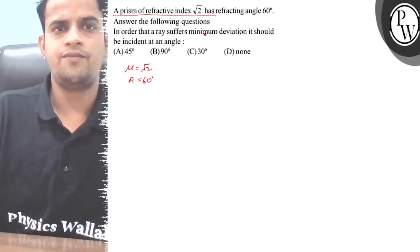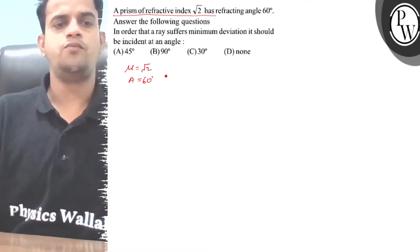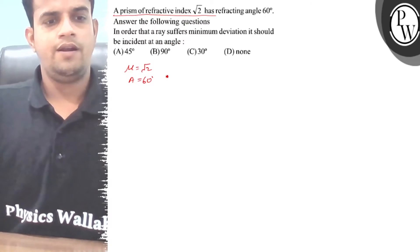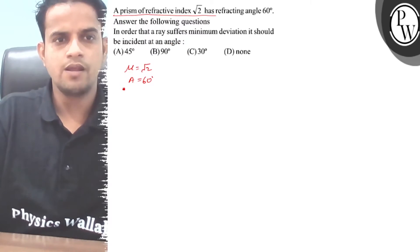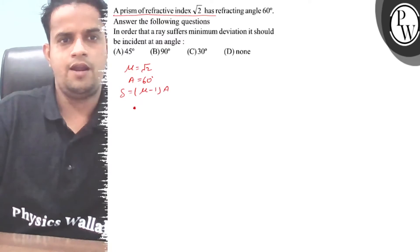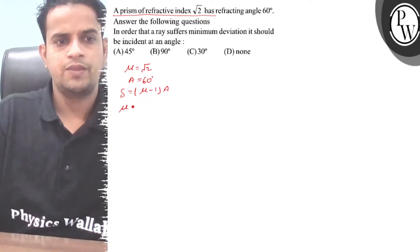In order that a ray suffers minimum deviation, it should be incident at an angle - find the incident angle. Okay, in this situation we make the concept of minimum deviation angle clear. μ equals sin of (A plus δm) divided by 2, divided by sin A by 2.